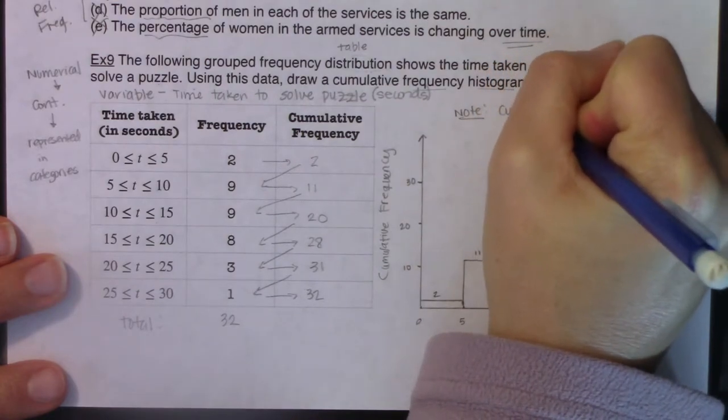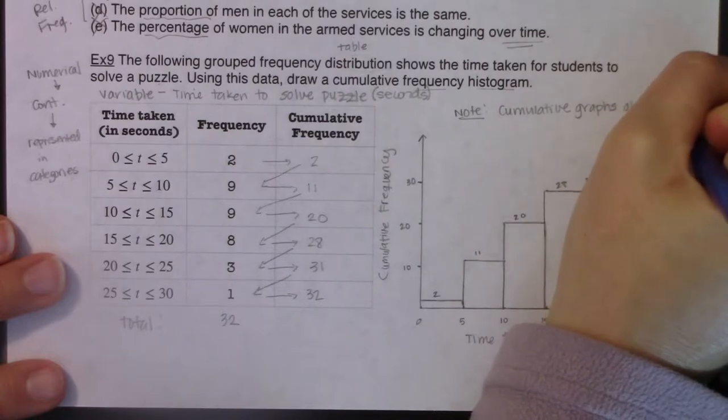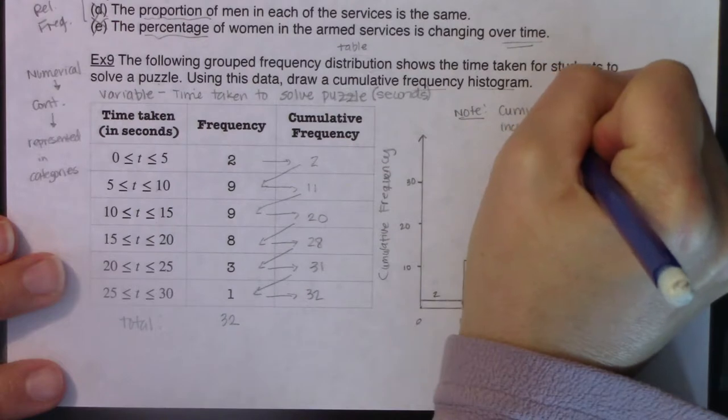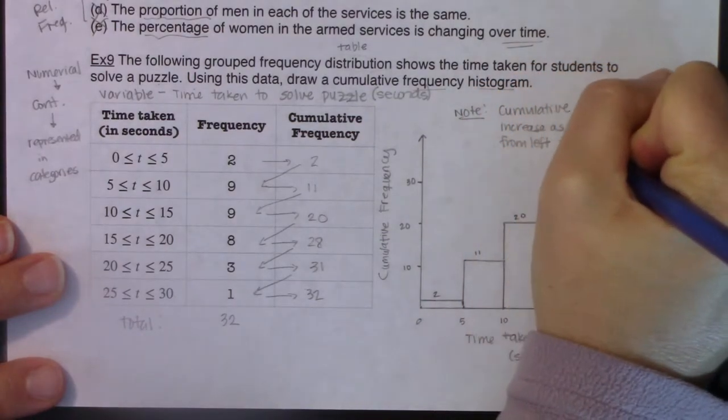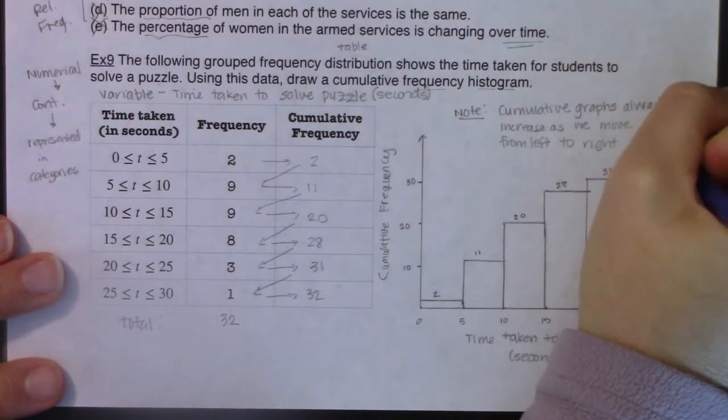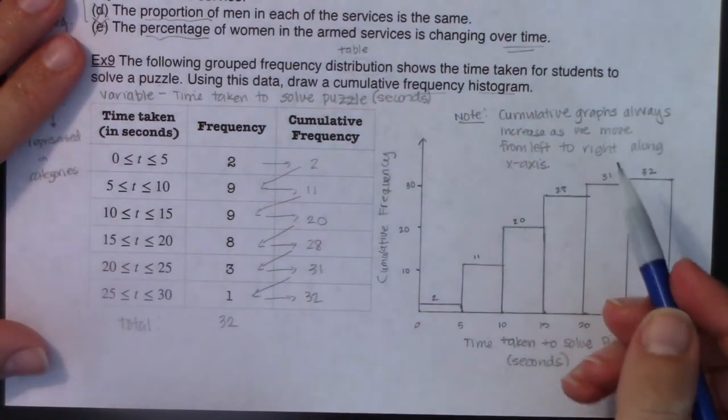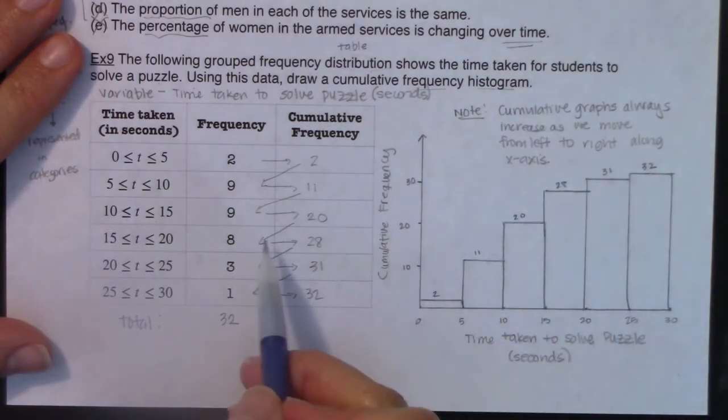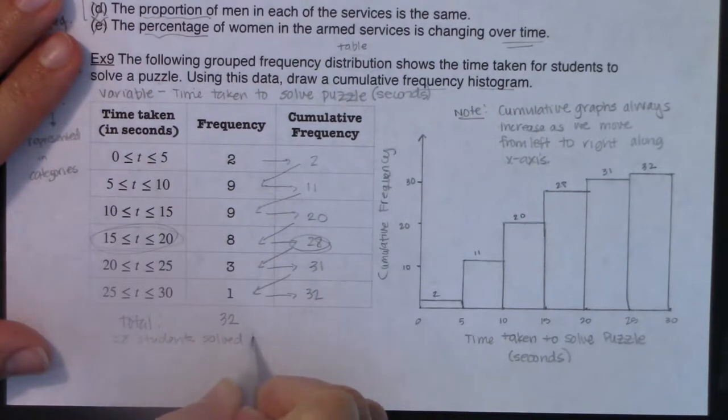A couple of things I want to just take note of: cumulative graphs, whether they're frequency histograms or relative frequency histograms, cumulative graphs always increase as you move left to right. And when I say from left to right, I mean along the x-axis. So as time was increasing, so were the cumulative frequency counts. And that's because we're accumulating data that will always be the case.